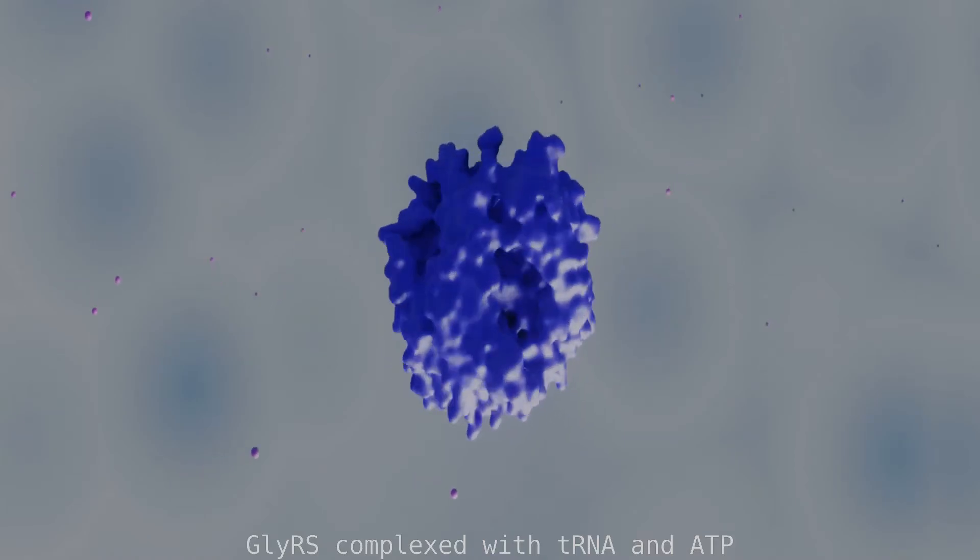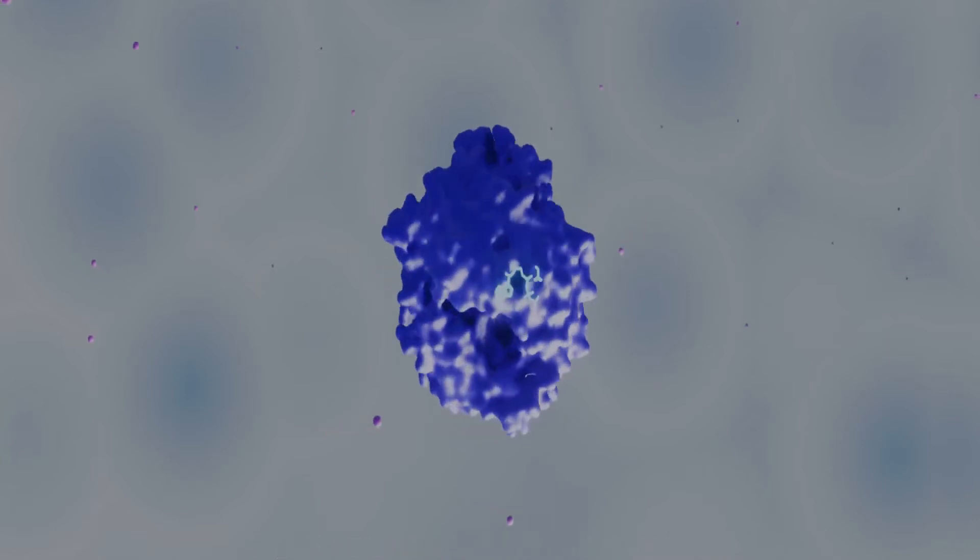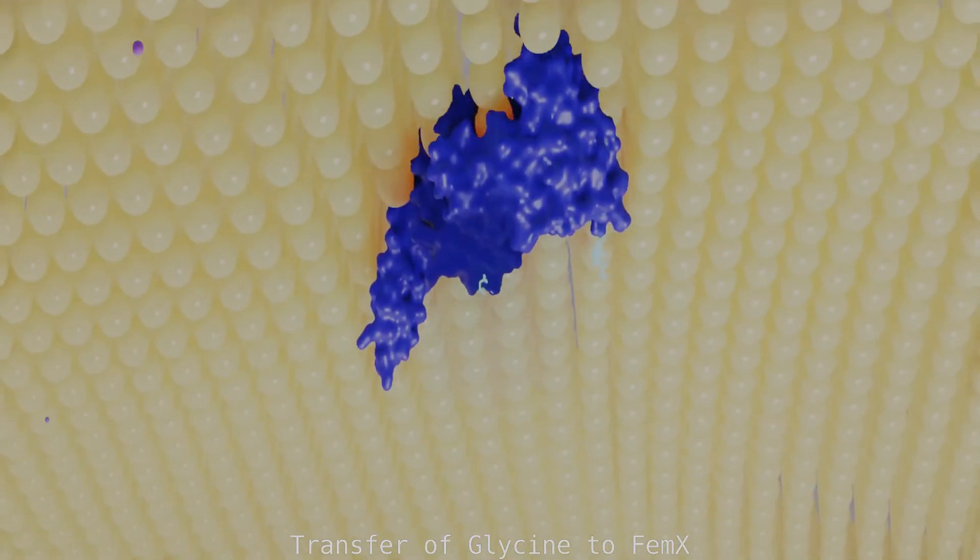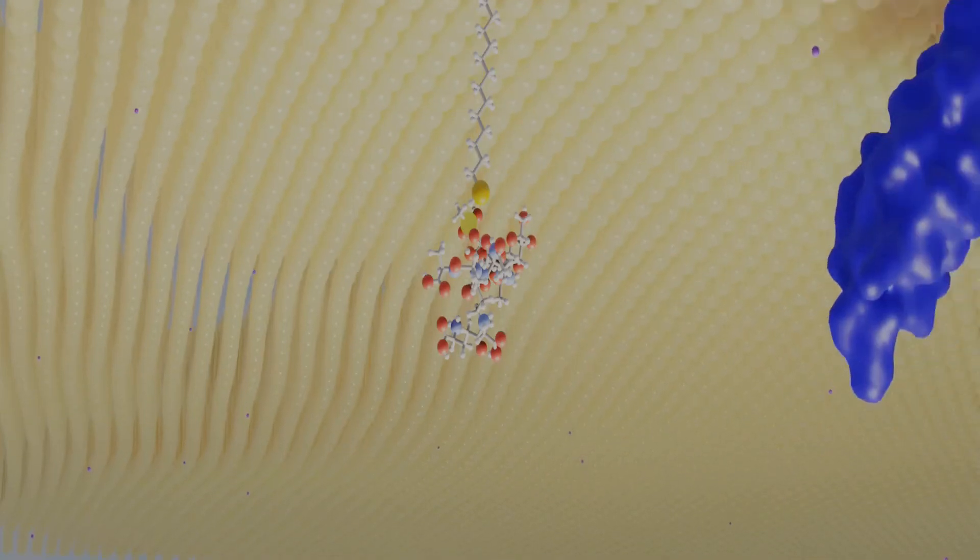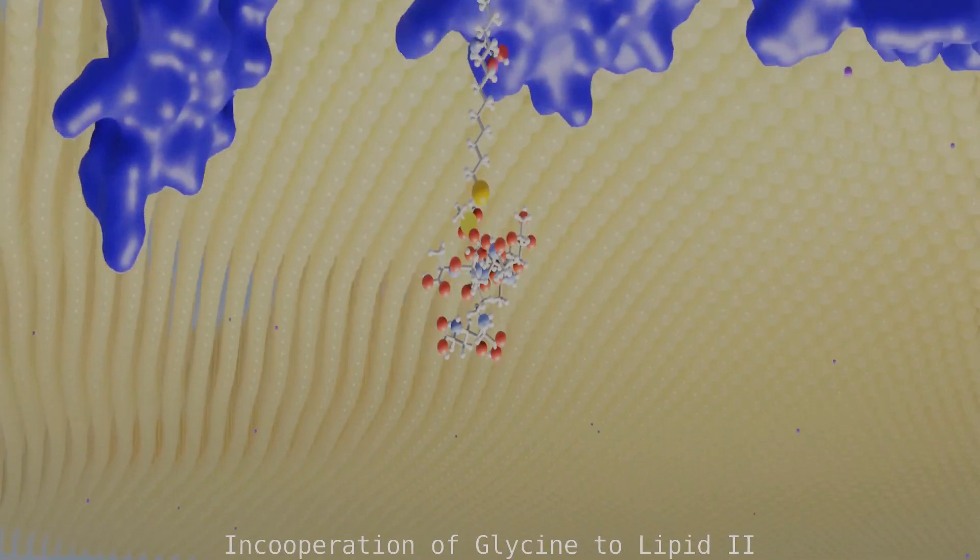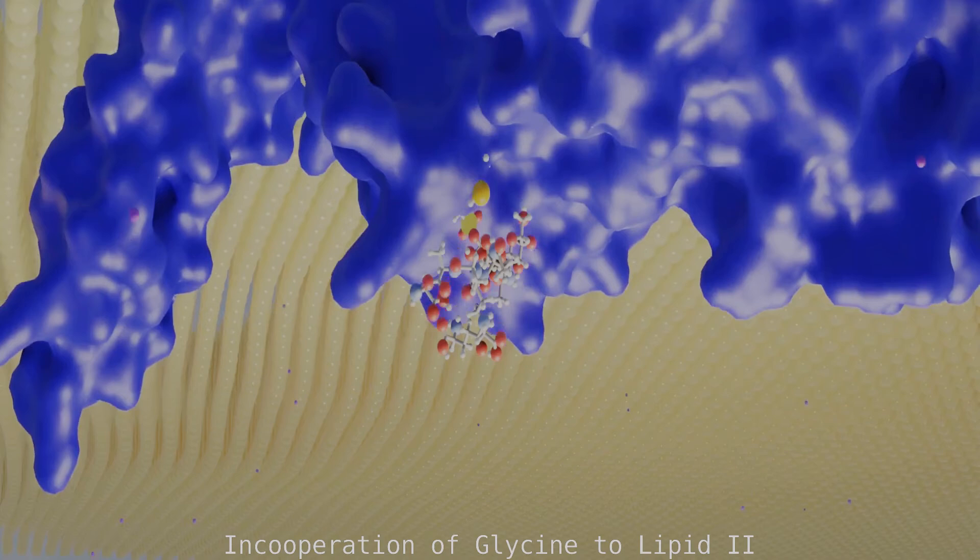GLYRS transfers the glycine to the proteins FEM-A, B and X, which are responsible for the formation of the pentaglycine bridge. For a better visualization, only FEM-X is shown in this video, which attaches the first glycine to lipid 2.